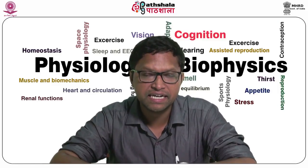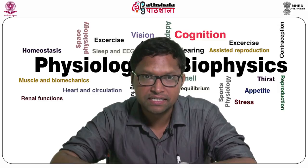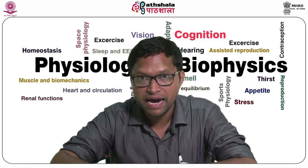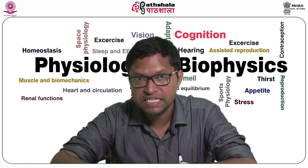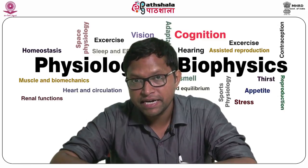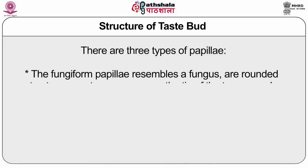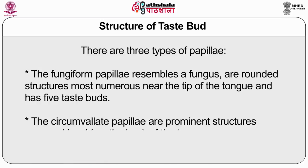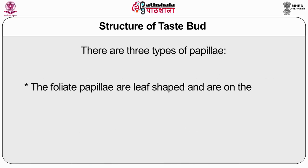Taste buds detect chemicals from the surface of the tongue because they are in contact with the external environment through a pore opening into the apical surface of the sensory cells. Microvilli on the sensory cells increase surface area. Taste buds are grouped in structures called papillae — literally meaning 'nipple.' There are three types: fungiform papillae, which resemble a fungus, are rounded, most numerous near the tip of the tongue, and have about five taste buds each; and circumvallate papillae, prominent structures arranged in a V-shape on the back of the tongue.